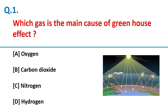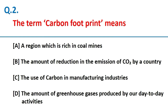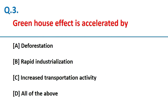Which gas is the main cause of the greenhouse effect? Carbon dioxide. The term carbon footprint means the amount of greenhouse gases produced by our day-to-day activities. The greenhouse effect is accelerated by deforestation, rapid industrialization, and increased transportation activity. So the answer is all of the above.